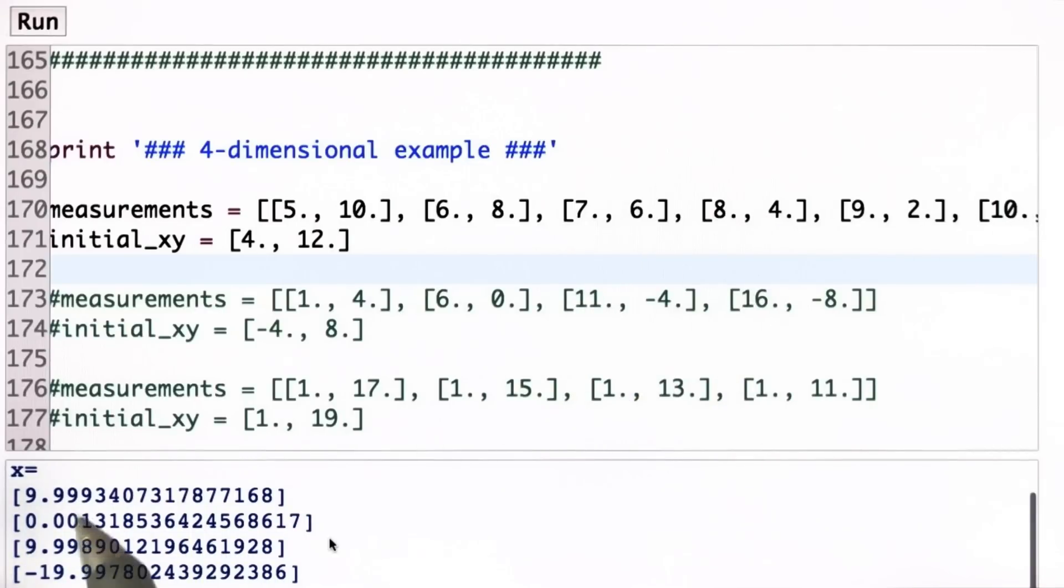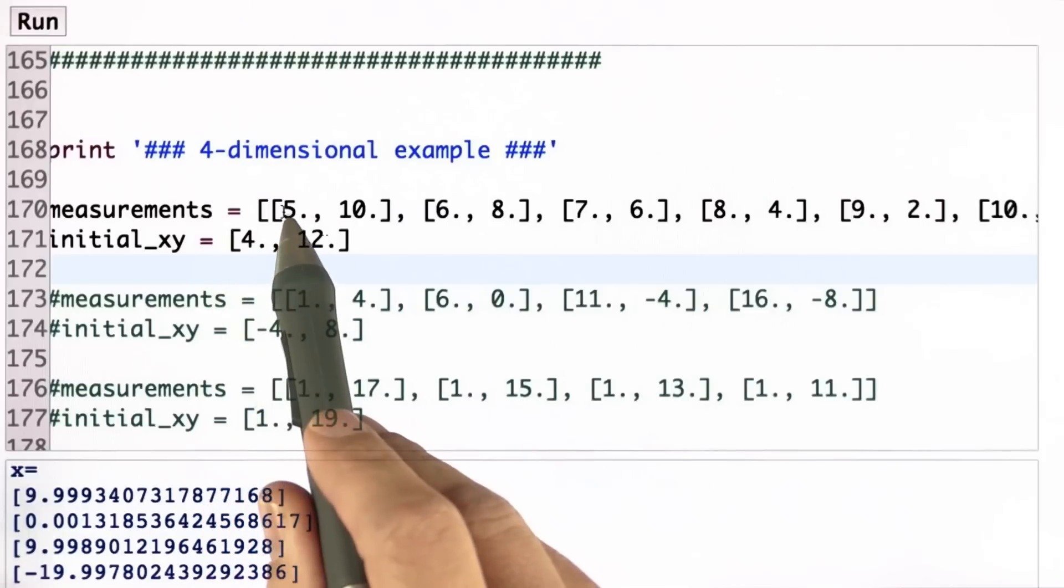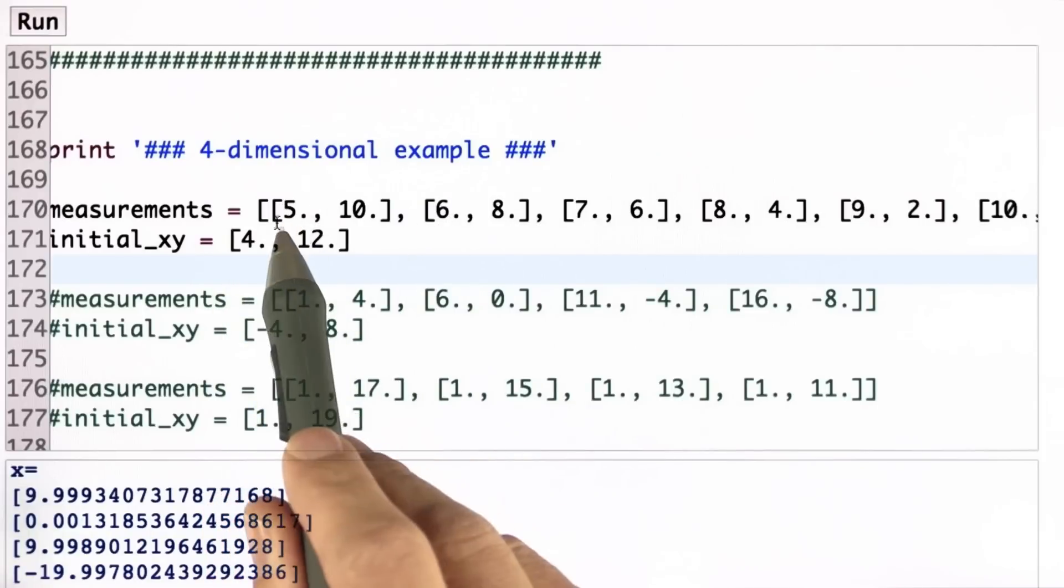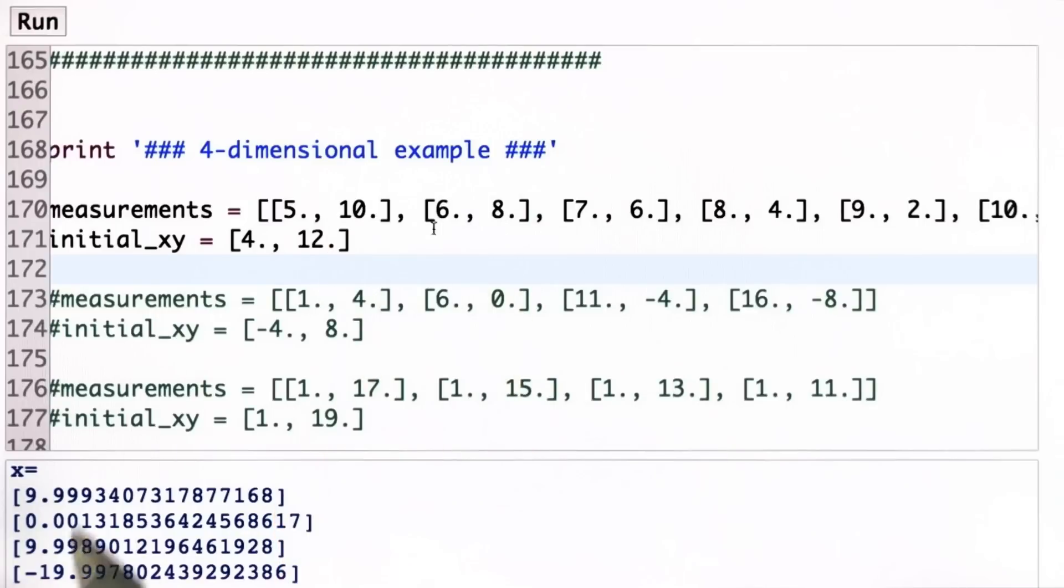In my output, I correctly get the estimate of 10 for my x and 0 for my y, and the velocity is 10 and minus 20. And as we had before, because dt equals 0.1, a step from 5 to 6 within a tenth of a time unit requires a velocity of 10, and from 10 to 8, 1 of minus 20. These numbers are correct.